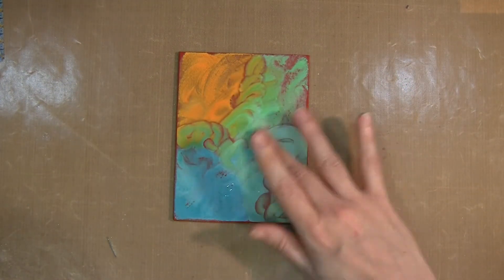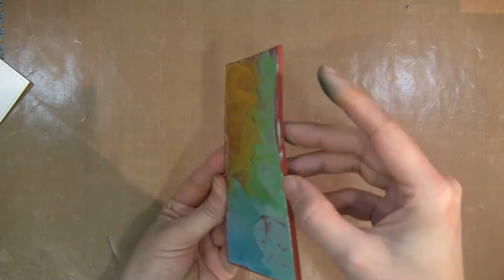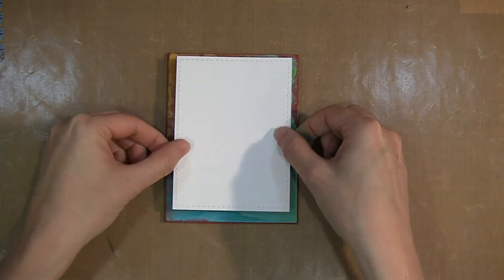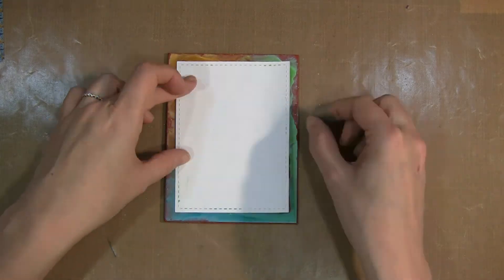I kind of picked it up here at the end to kind of help that water move around and blend those colors together. And again, just placed my cardstock on the top.